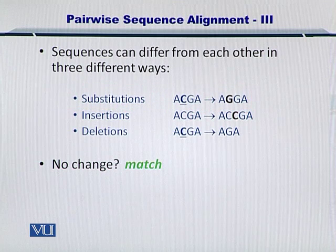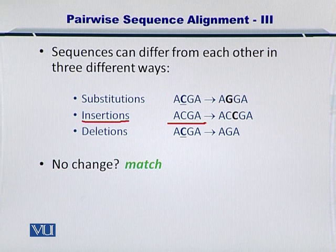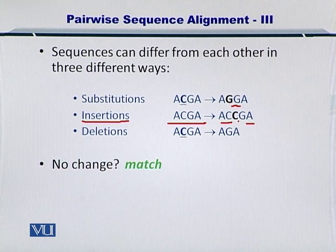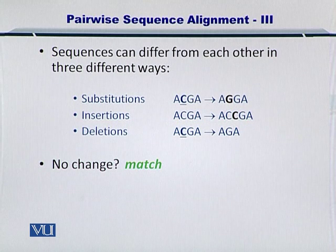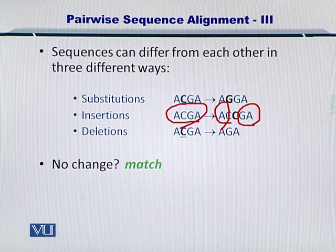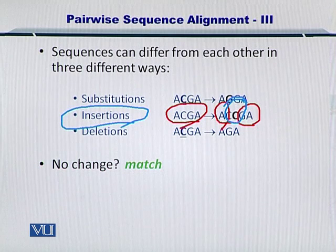Next, let's take a look at insertions. If you have a sequence ACGA and you're comparing it with another sequence ACCGA, you can guess that there is an extra C here and this is an insertion. So the two sequences will match very nicely except for this C in the middle. So this is an insertion.